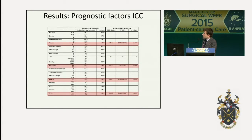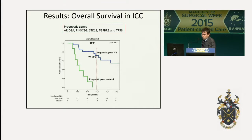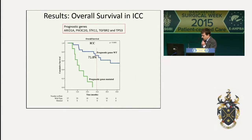At multivariate analysis, size of tumor, radicality of surgery, ARID1A mutation, and TP53 were confirmed to be the strongest predictors of survival in these patients. We performed a subgroup analysis of patients with ARID1A mutation — a prognostic gene identified at univariate analysis — comparing with patients without the mutation, the wild-type group. Patients with mutation in this gene showed a poorer overall survival compared to the wild-type group, with no survival at three years compared to 72% in the wild-type group.